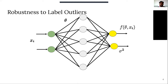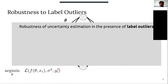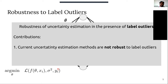Since uncertainty estimation is so important, we looked into its robustness — specifically what happens when the labels on which it is learned contain outliers. In this work, we explore the robustness of uncertainty estimation to the presence of label outliers. We show and demonstrate how current uncertainty estimations are not robust to label outliers, and finally we propose a loss function which is able to learn the uncertainty in the presence of outliers.